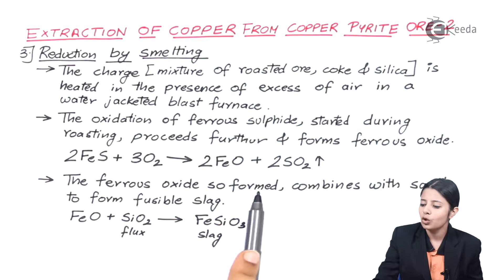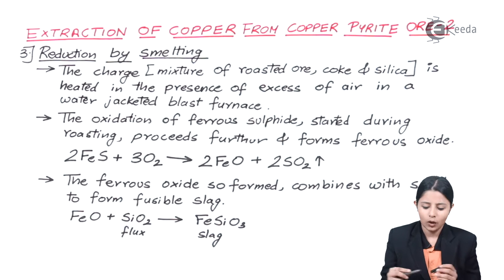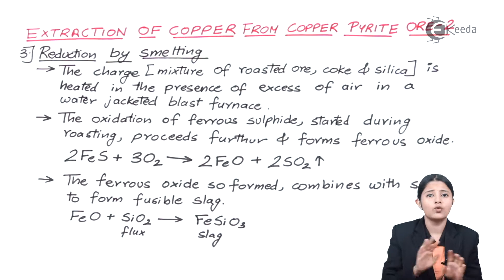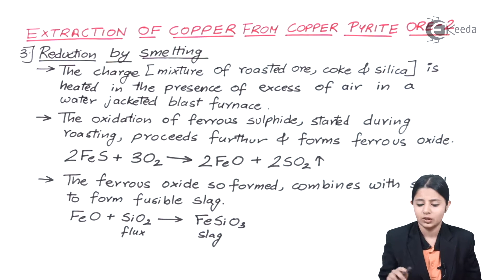Now let us see what we can do with this FeO. The ferrous oxide so formed combines with sand to form fusible slag. Now what basically slag is? Slag is a form of impurity. All the impurities combine together and form slag. Now this slag will not react with anything, will not get mixed up in anything. So we can easily filter out the slag from our molten extracted metal.